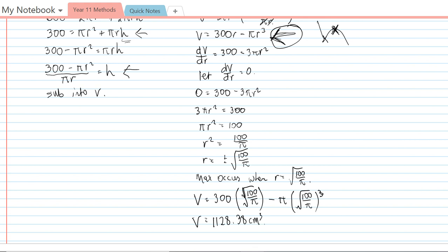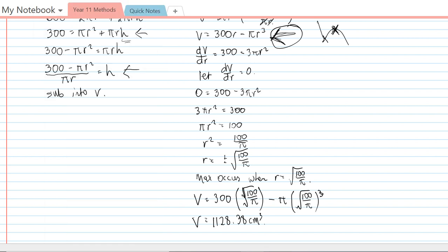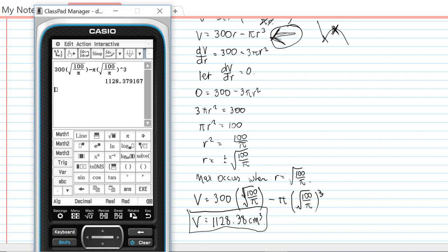And that's centimeters cubed. Seems good. So that is the maximum capacity of this particular tin can. Alternatively, we can do this on the calculator as well. So if I graph the equation for V.